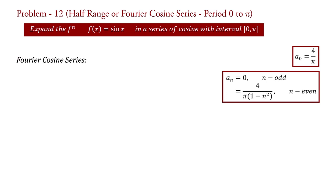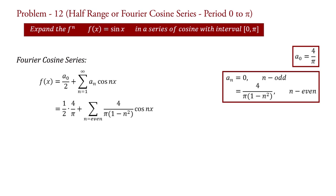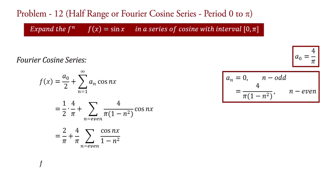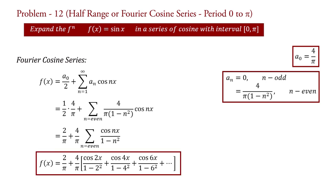Now substituting the values of a₀ and aₙ into the Fourier cosine series, we get f(x) = (1/2)(4/π) + summation over even n of (4/π)(1/(1−n²)) cos(nx). Simplifying: f(x) = 2/π + (4/π) × summation over even n of cos(nx)/(1−n²). In expanded form, f(x) = 2/π + (4/π)[cos(2x)/(1−4) + cos(4x)/(1−16) + cos(6x)/(1−36) + ...]. This is the required series for the function.